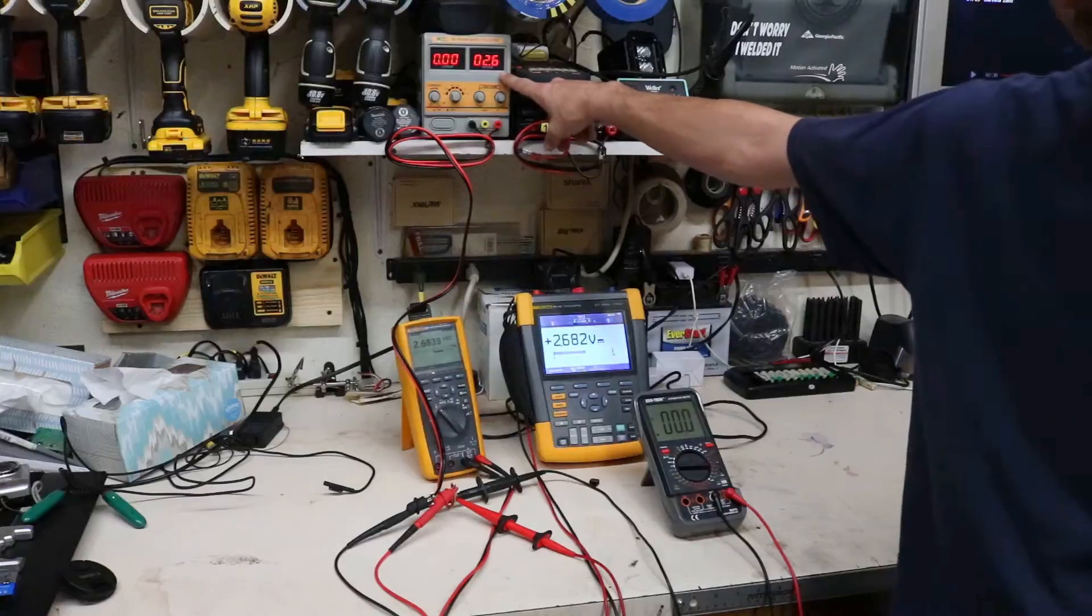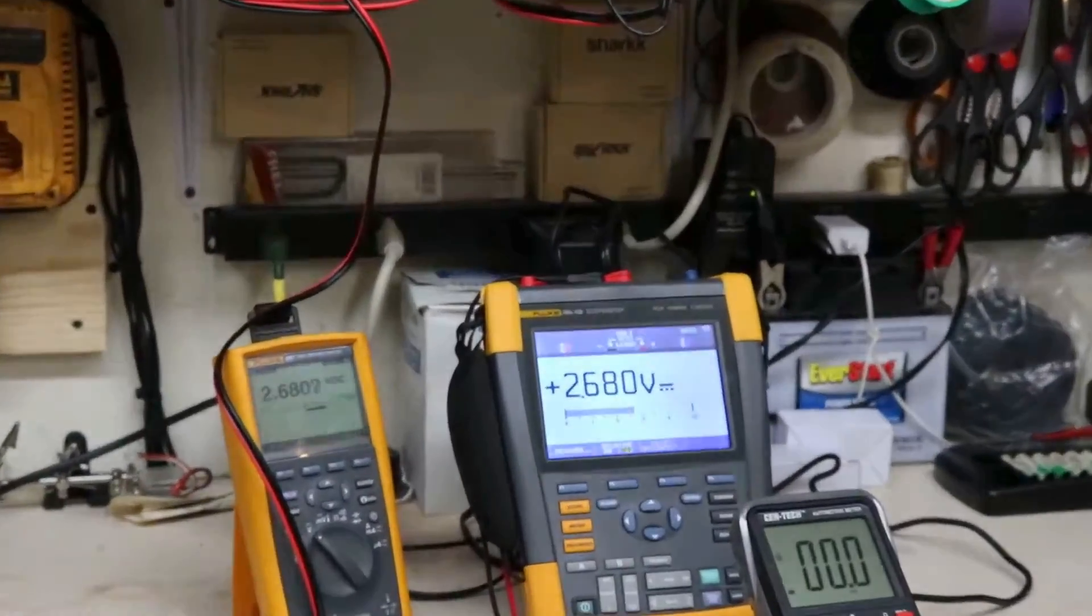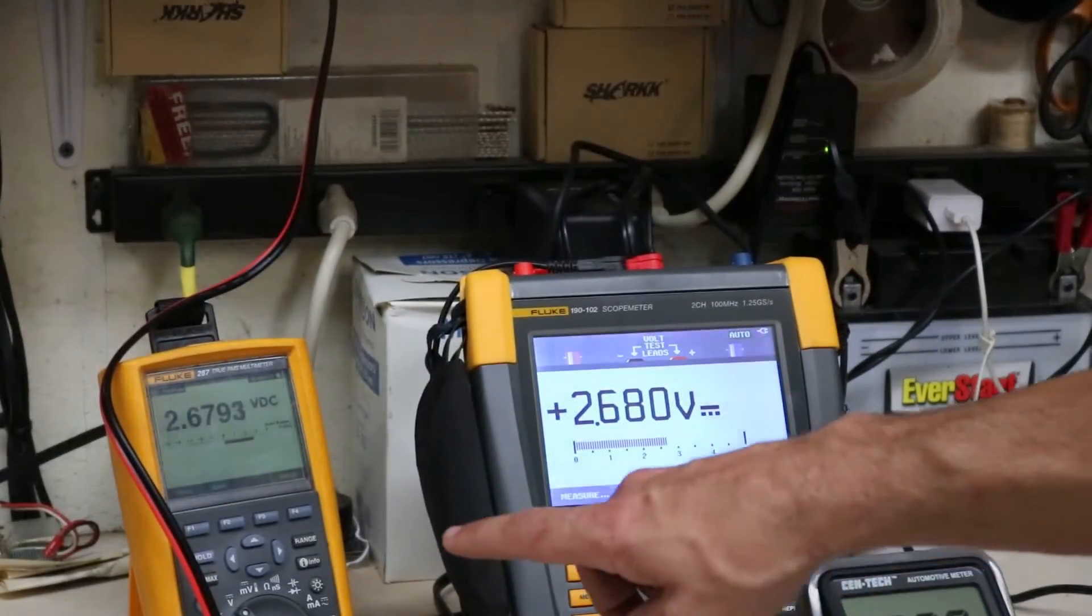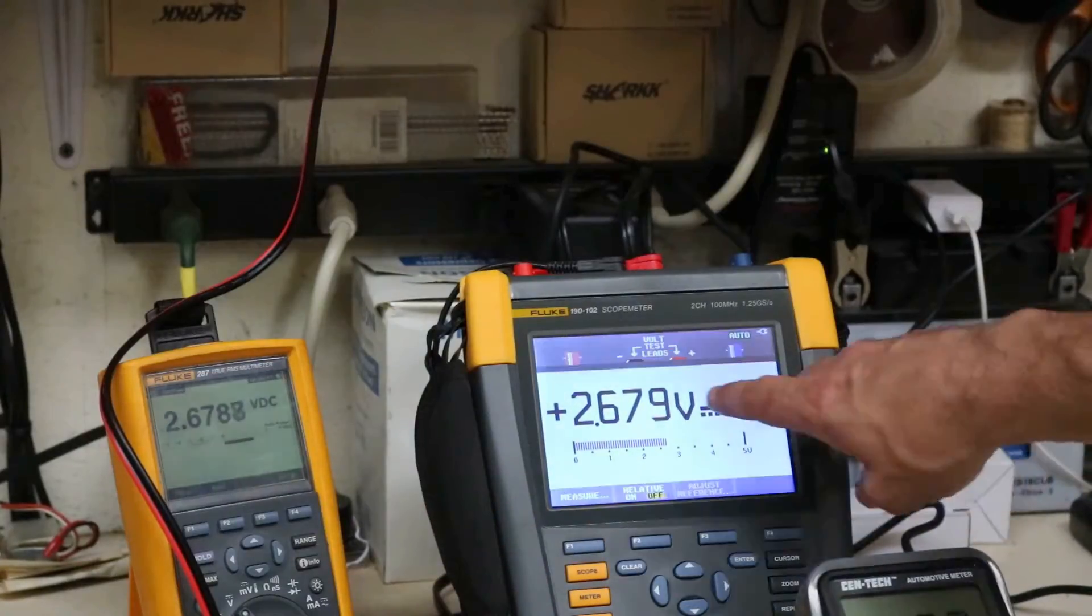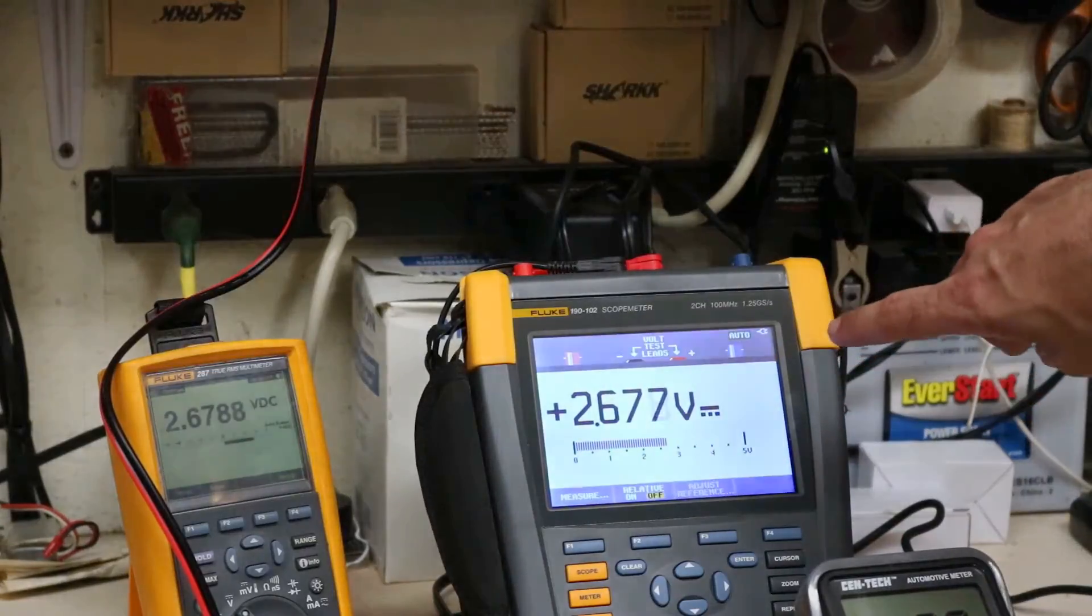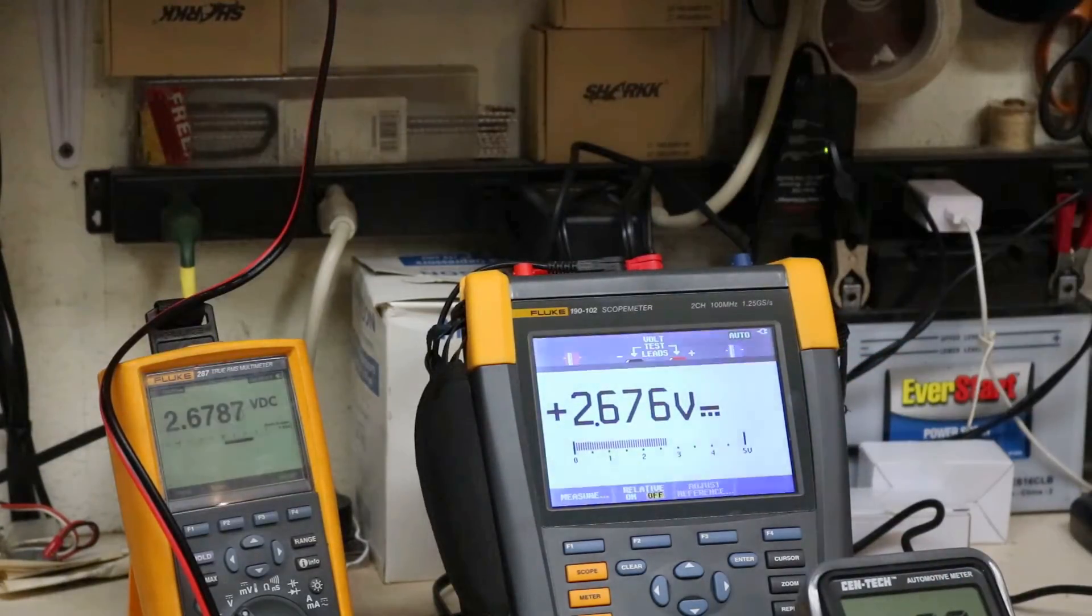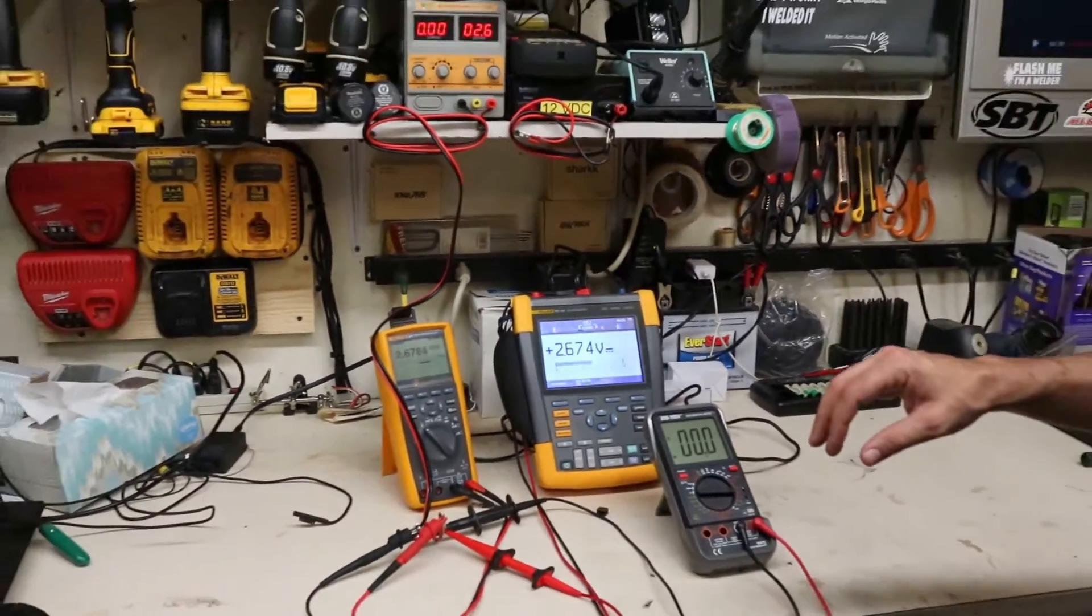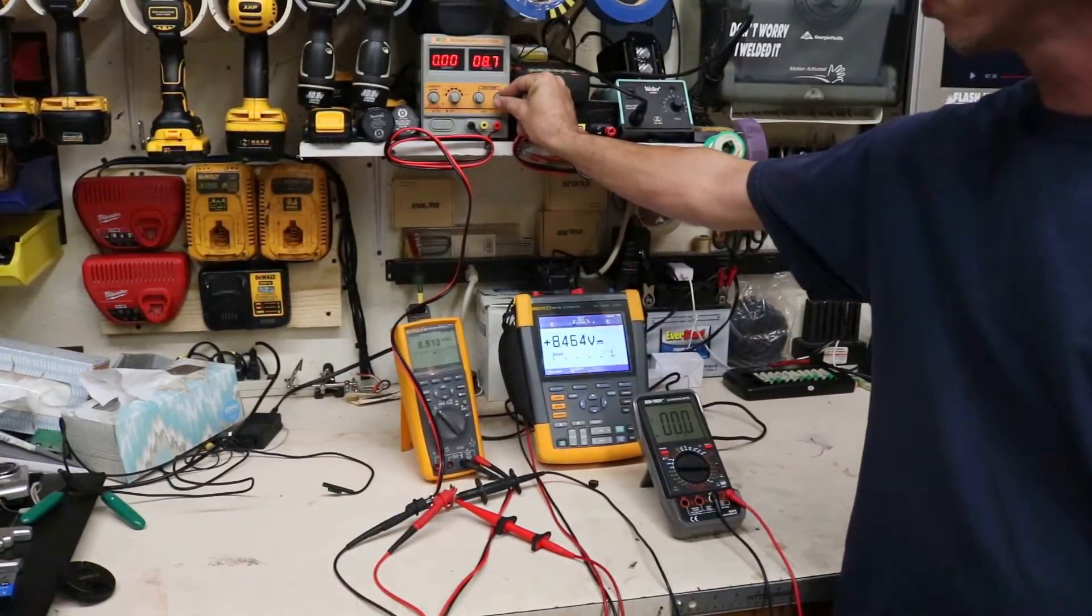So here I have my power supply set to 2.6 volts. Let me zoom in on these meters. I have 2.67 on this one and 2.6789 and 2.678 on the other, so they're within a percent of each other. So I know those are pretty close. So I'll zoom you out, we'll go up to 10 volts.